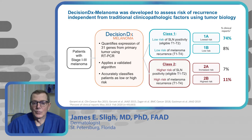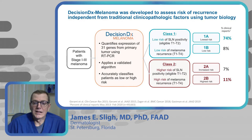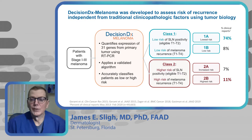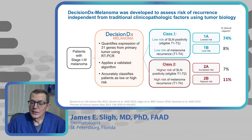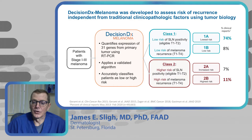Class 1 indicates low risk of both sentinel lymph node biopsy positivity and melanoma recurrence. Class 2 indicates high risk of melanoma recurrence, and these patients should be considered for sentinel lymph node biopsy due to high positivity rates. Class 1 breaks down into 1A (lowest risk) and 1B (low but intermediate). Class 2A is increased risk, and 2B is the worst case scenario, correlating with high concern for recurrence.